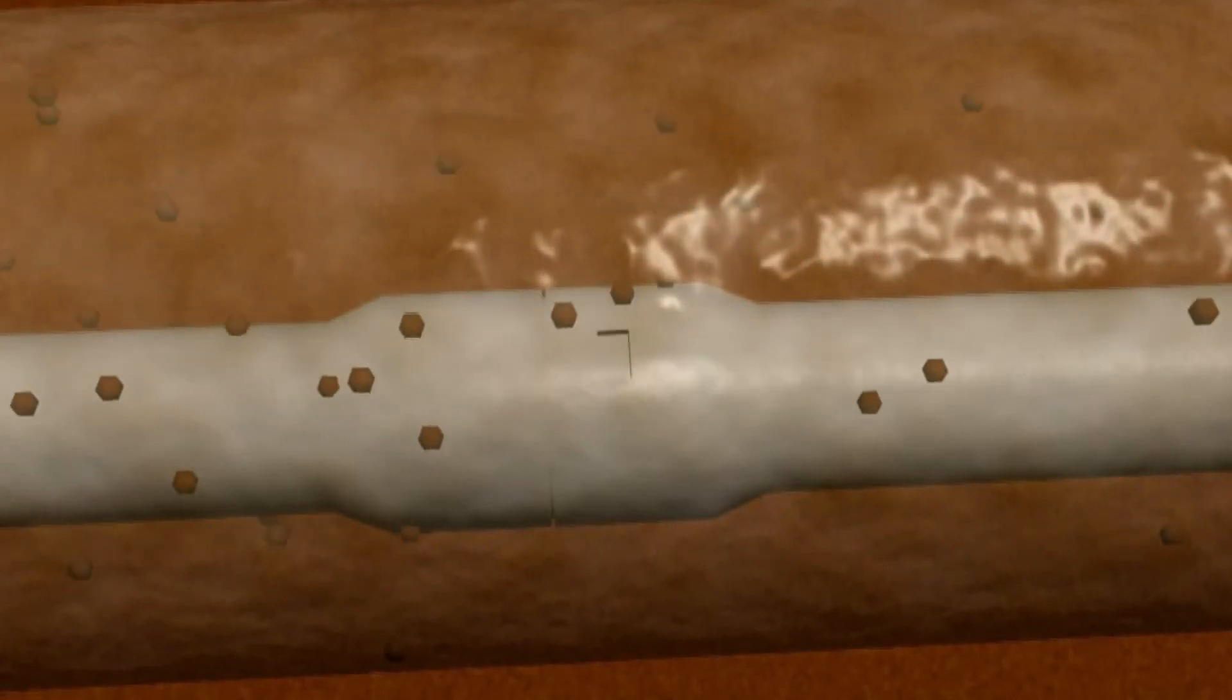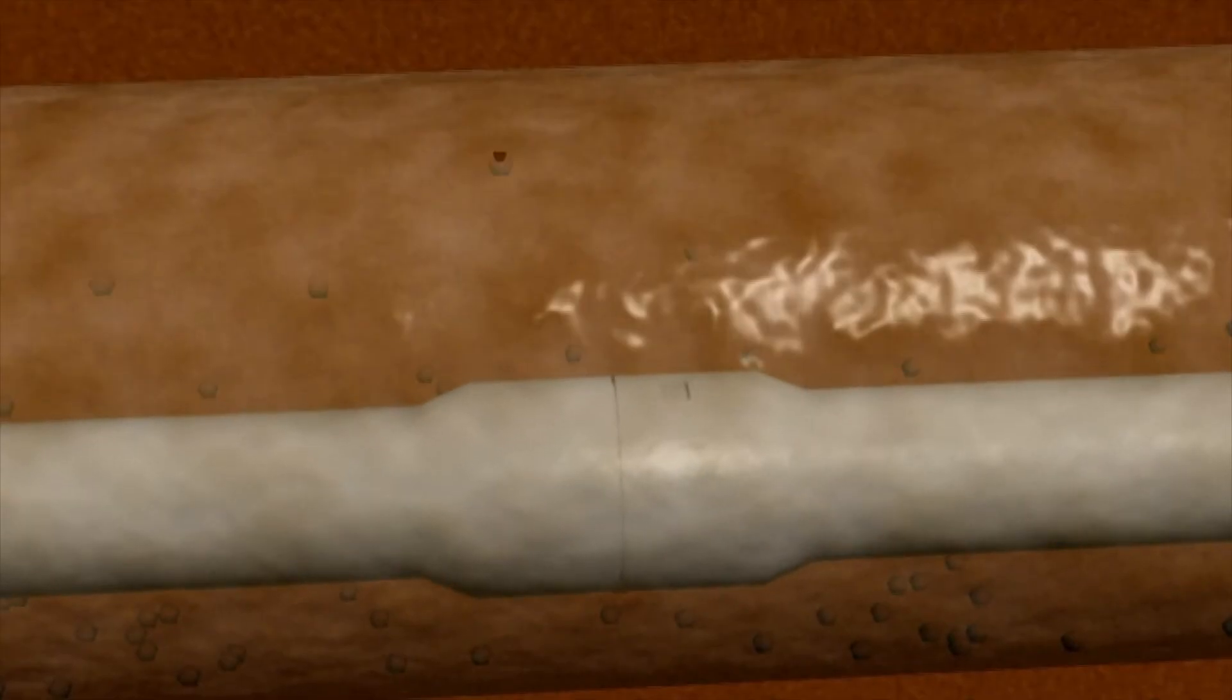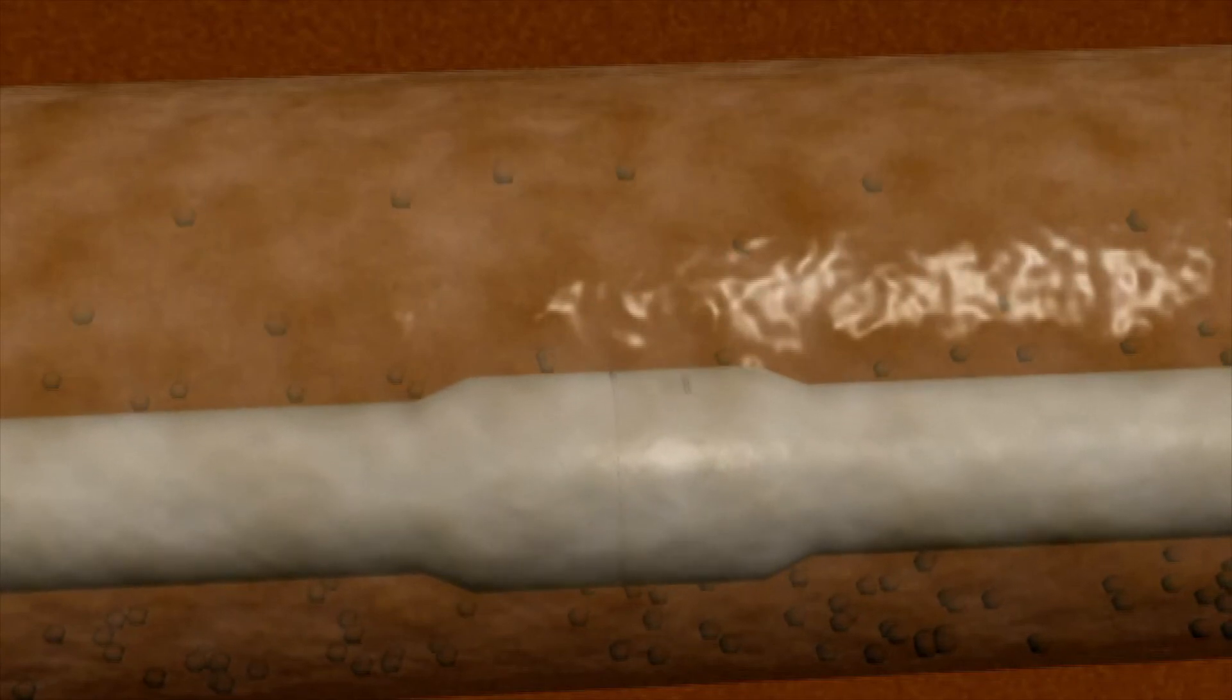In case of no rotation, the cuttings accumulate at the lower part of the wellbore, and only few cuttings at the top are removed by the effect of high velocity of the flow. When the pumps are turned off, cuttings move downwards and accumulate below the drill string, increasing the risk of getting stuck.